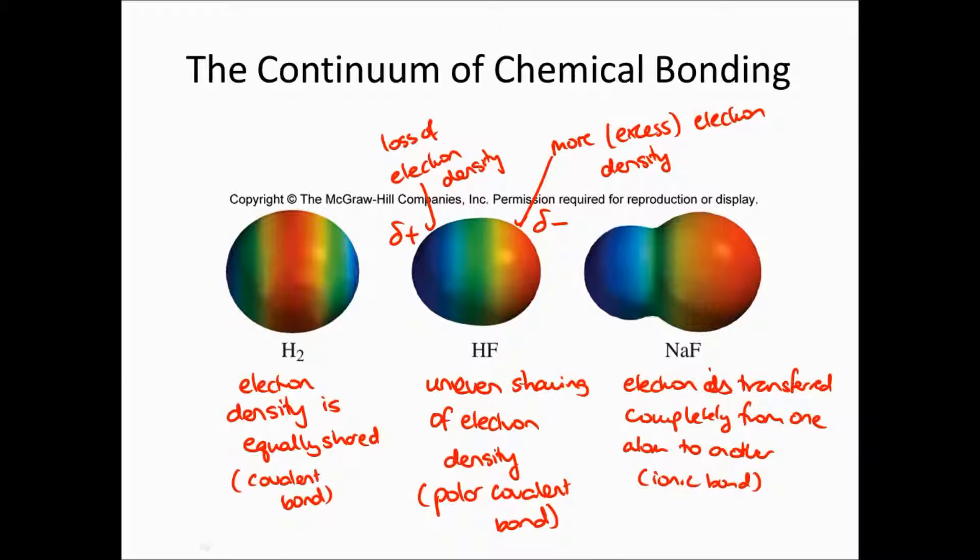Where the electron density is shared unevenly between the two atoms concerned. And since we have a partial positive end and a partial negative end, we have a dipole moment, which is drawn from the positive end to the negative end.